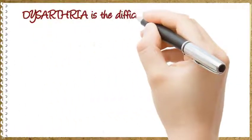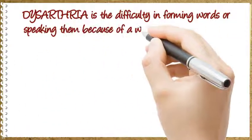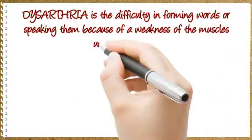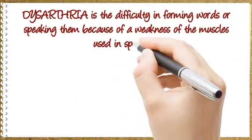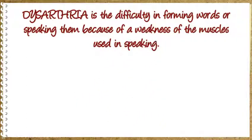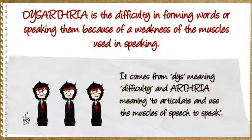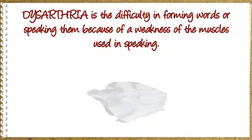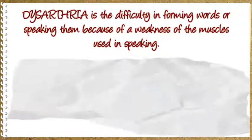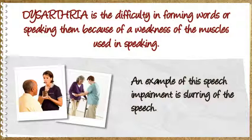Dysarthria is the difficulty in forming words or speaking them because of a weakness of the muscles used in speaking. It comes from dys meaning difficulty and arthria meaning to articulate and use the muscles of speech to speak. An example of the speech impairment is slurring of the speech.